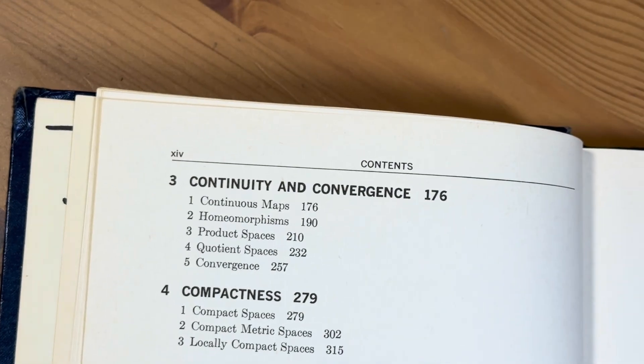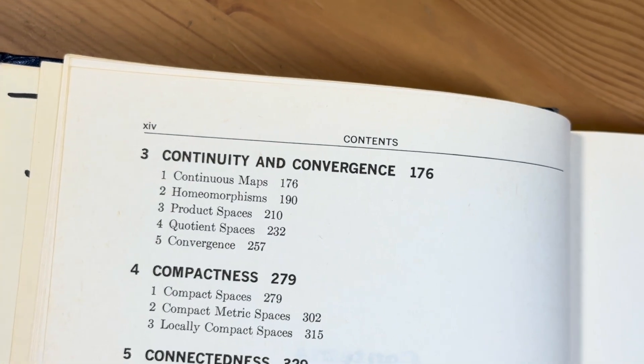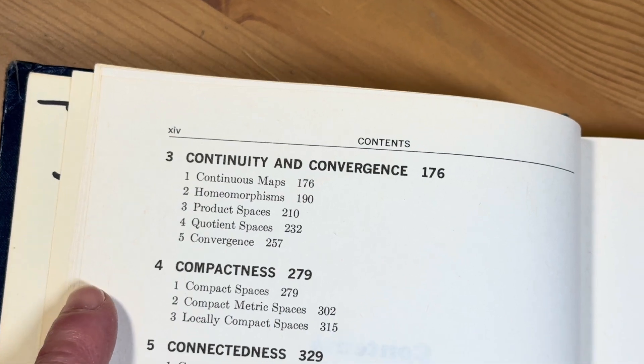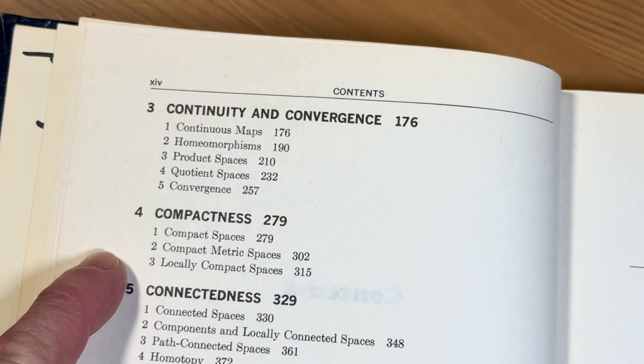Over here we have continuity and convergence. So continuous maps. Homeomorphisms. Product spaces. Quotient spaces. Convergence.